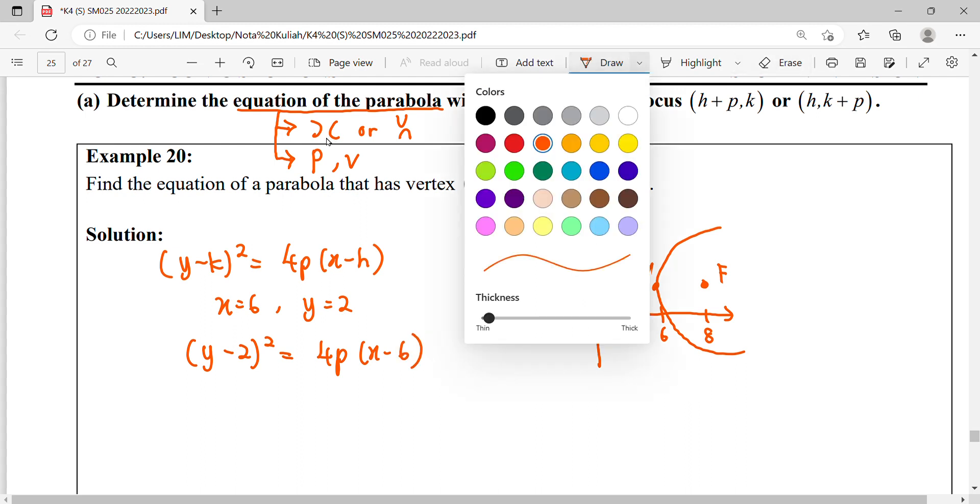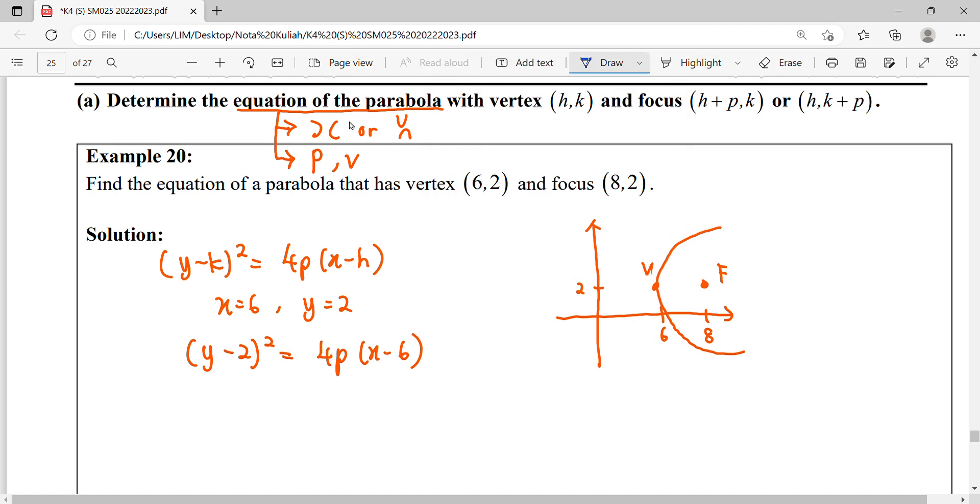Now we're going to find out what is our value of P. Notice that we have a focal point here. The distance between vertex and focal point will be the value of P. We can see the distance between vertex and focal point here is 2 units. Therefore, our P is 2 units, positively opening to the right.